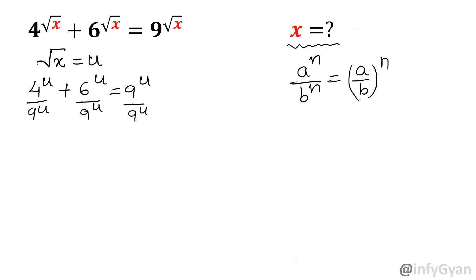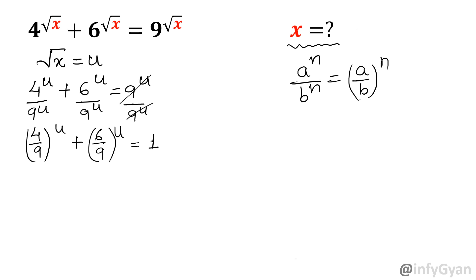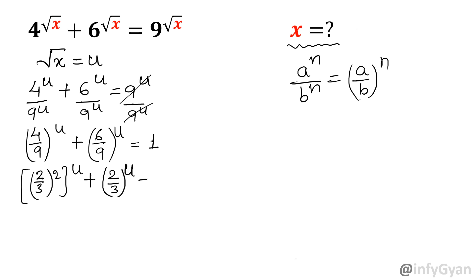So I will write 4 over 9 whole power u plus 6 over 9 whole power u equal to 1. Now I will write 4/9 as 2 over 3 whole square, and for 6/9, cancelling gives 2 over 3. So 2 over 3 whole square power u plus 2 over 3 power u equal to 1.